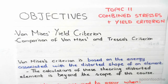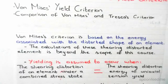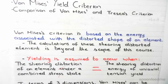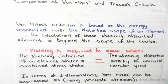Now the calculations of this energy distortion is very much beyond the scope of this course. So we make an assumption that yielding is assumed to occur when the shearing distortion of an element under a combined stress state equals the shearing distortion of an energy under a uniaxial tension yield. This simplifies the process in a massive situation.